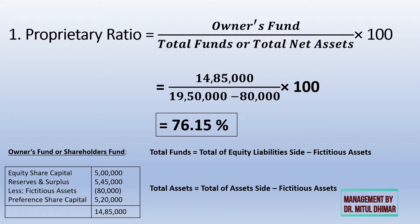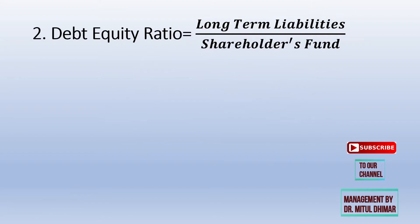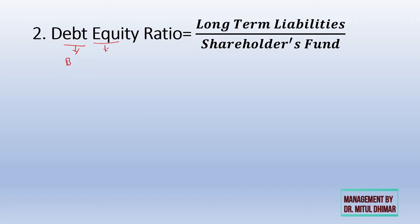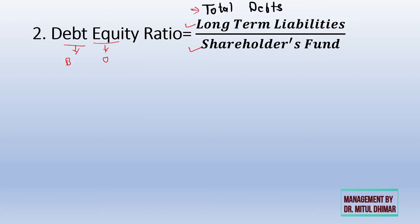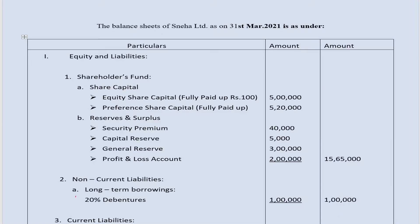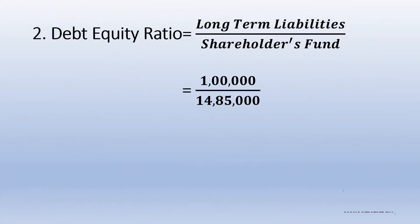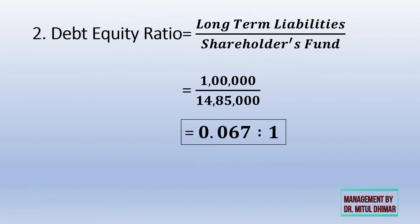Another important ratio is debt equity ratio — a very famous and commonly used ratio. As the name suggests, it indicates the proportion of debt (borrowed capital) against equity (owner's capital, i.e., shareholders' fund). The formula is long-term debt divided by shareholders' fund. Some writers use total debt, but the proportion with long-term debt is more relevant. Checking the balance sheet, the only long-term debt is 20% debentures of rupees 1 lakh, and owner's fund is 14,85,000, giving a debt equity proportion of 0.067 to 1.